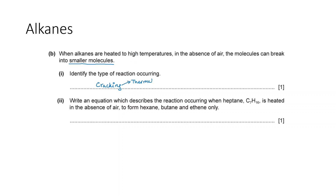If the alkanes are heated to high temperatures in the absence of air with no mention of a catalyst, it is thermal cracking. If it were catalytic cracking, a catalyst like Al₂O₃ or zeolite would be mentioned.